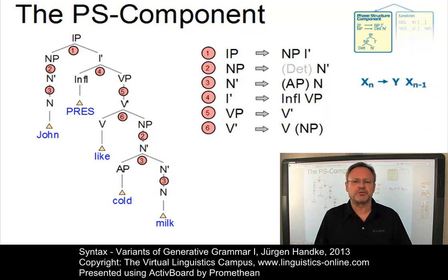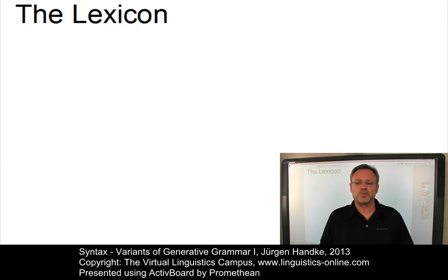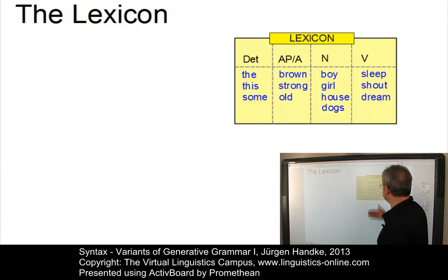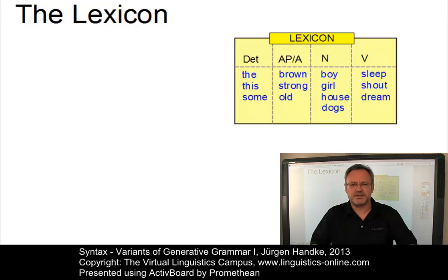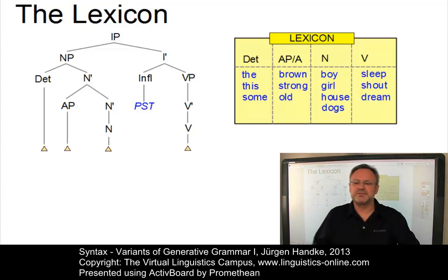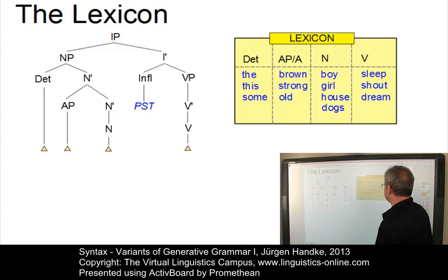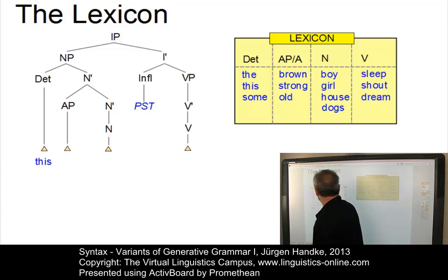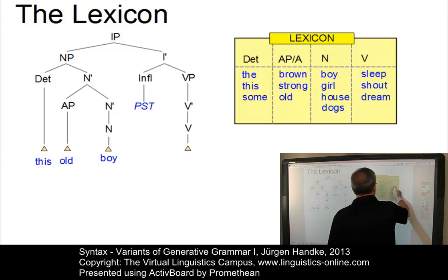Let us now turn our attention to the second component of a phrase structure grammar: the lexicon. The lexicon contains the information about the words of a language. In its simplest form, it pairs lexemes with grammatical category – a set of determiners, a set of adjectives that occur in an adjectival phrase, nouns and verbs. Let us illustrate how lexical insertion works. Here is a sentence structure that can be the result of the application of some of our phrase structure rules. By means of a simple lexical insertion principle, we can match word classes with the terminal nodes in the tree. For example, we could have a sentence such as: this old boy slept.